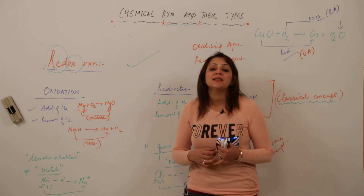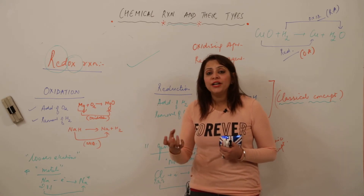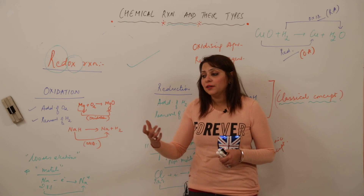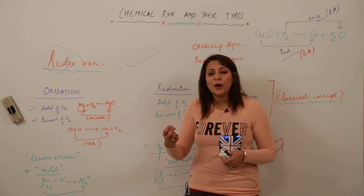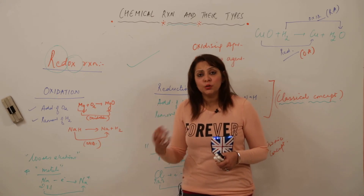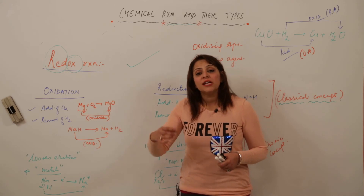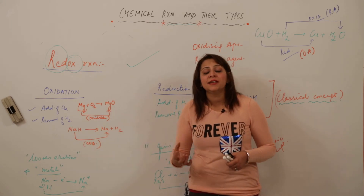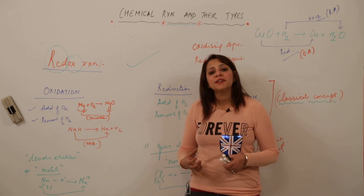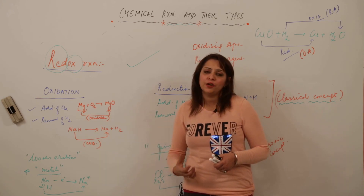The second example is rancidity — the oxidation of food. If you cook something today, tomorrow it gets stale, starts emitting a foul smell, and no longer looks fresh. When food material comes in contact with oxygen, it gets rancid — it becomes unfit for eating, its smell changes, and its taste is altered.